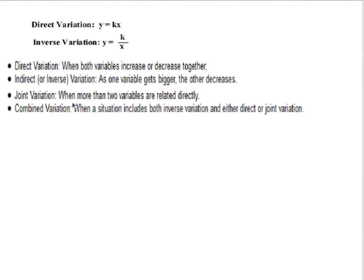Joint variation is when we have more than two variables that are related directly. So it's really the same idea as direct variation, but there's just more than two variables. Rather than just y and x, there's going to be y, x, and maybe z, or w, or something else for a variable. It will still have this constant of proportionality involved in it.